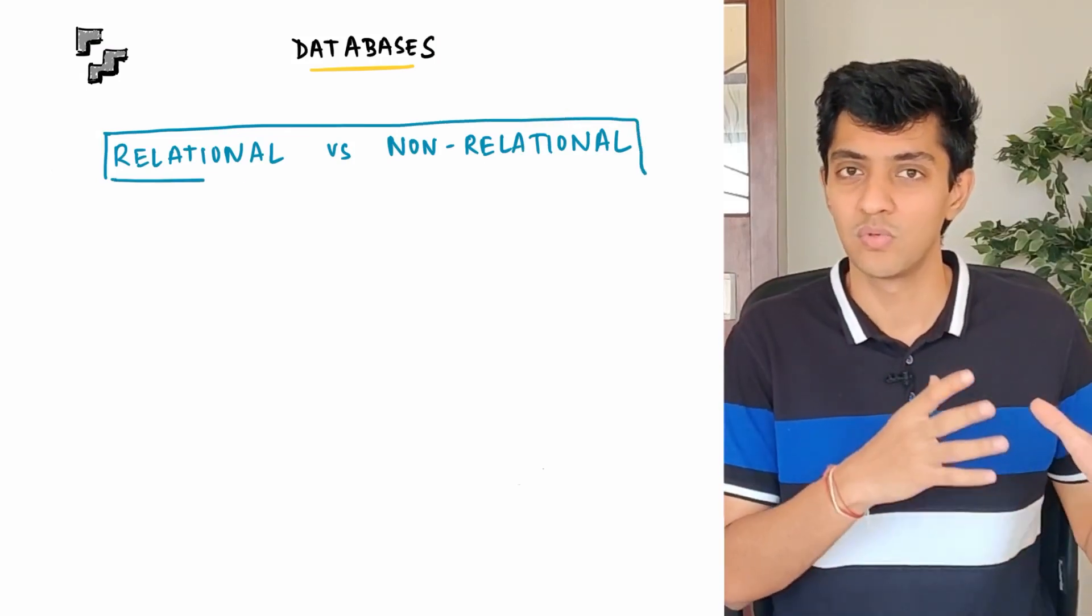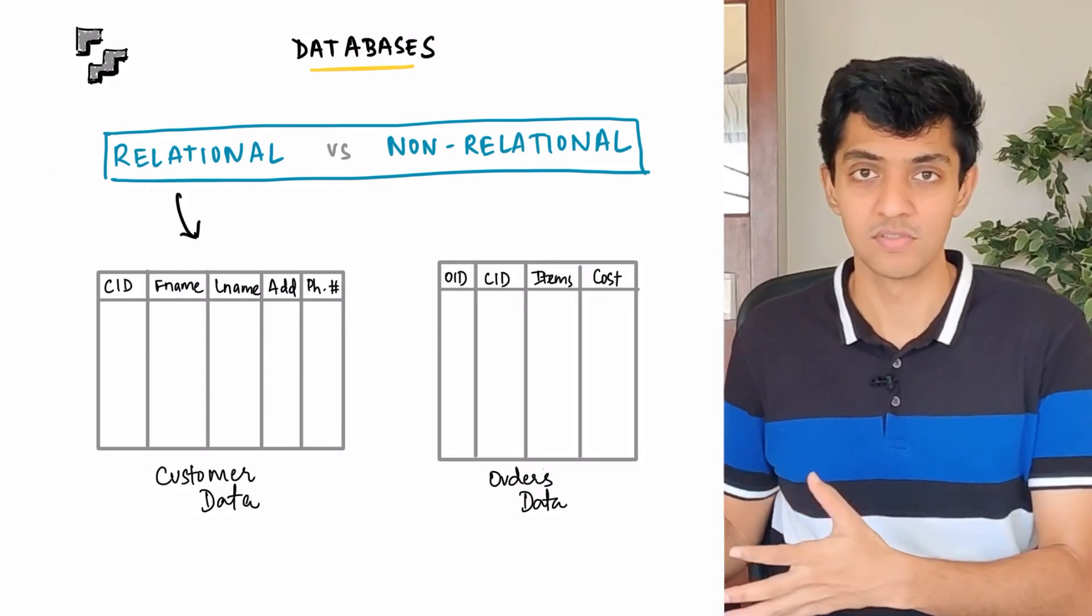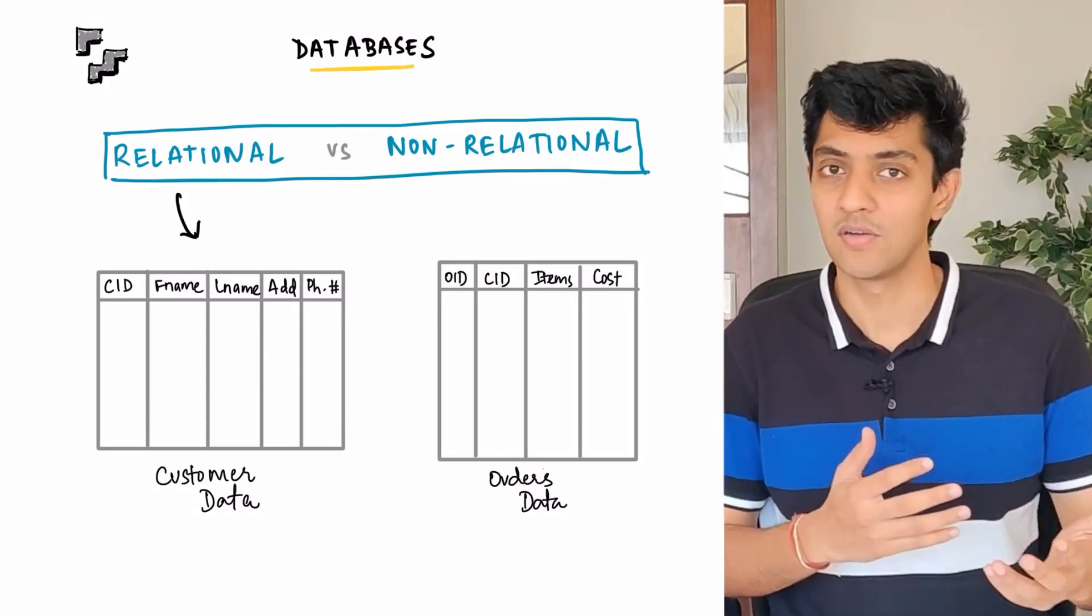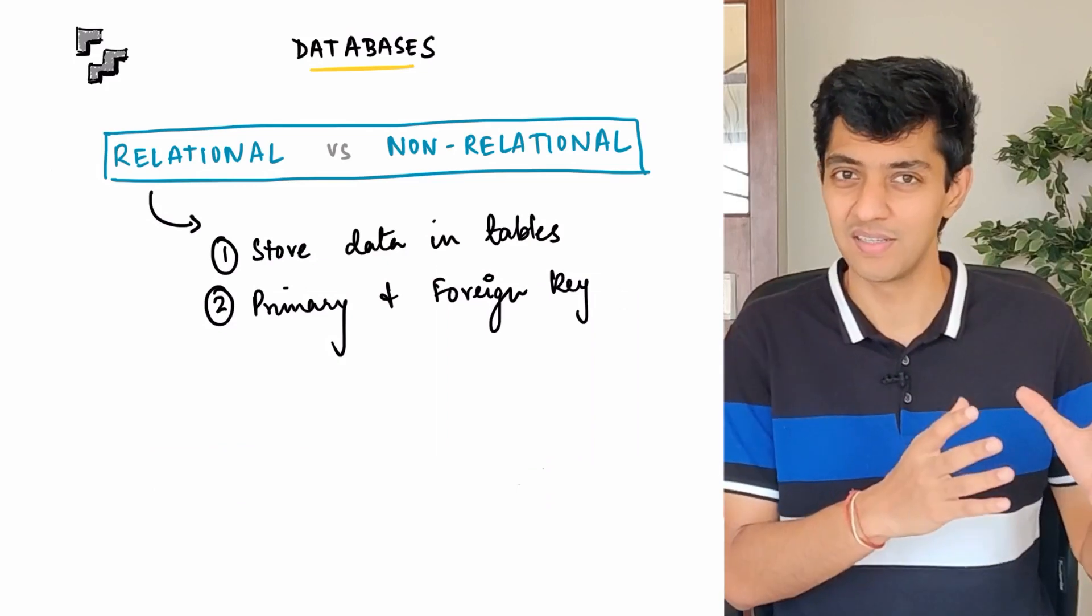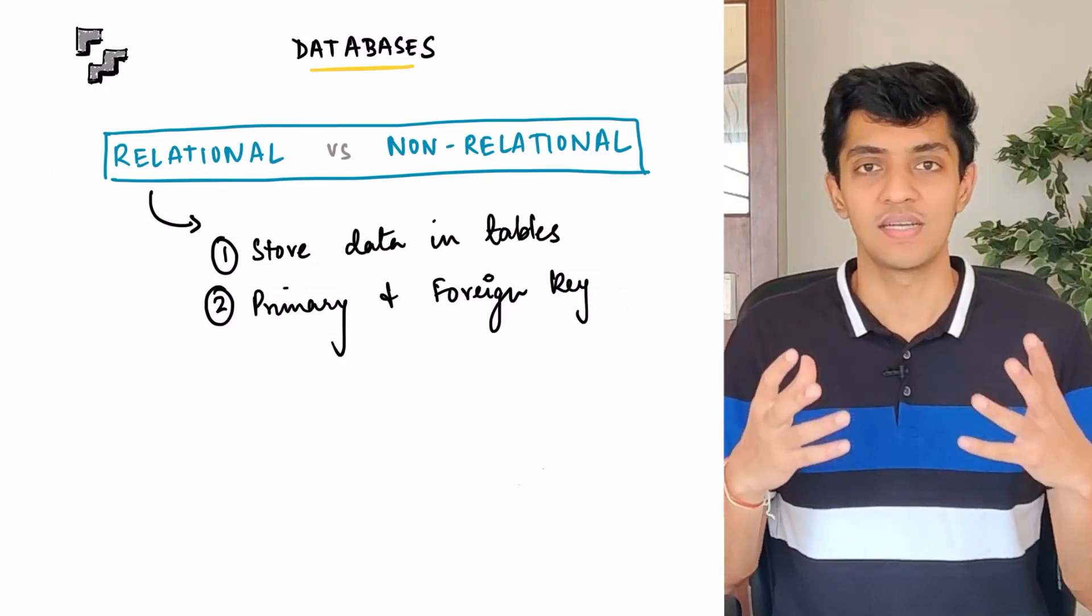Relational databases would look something like this. The data is stored in the form of tables, meaning rows and columns and each table has something called a primary key, which is a mandatory column and could possibly have something called a foreign key. Now what is exactly a primary key?